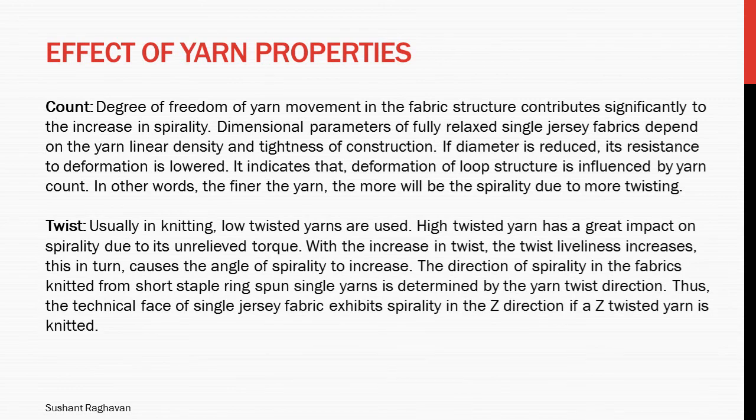In knitting, low twisted yarns are usually used. High twisted yarn has a great impact on spirality due to its unrelieved torque. With the increase in twist, the twist liveness increases, which in turn causes the angle of spirality to increase. The direction of spirality in fabrics knitted from short staple ring spun single yarn is determined by the yarn twist direction. Thus the technical face of single jersey fabric exhibits spirality in the Z direction if a Z twist yarn is knitted.